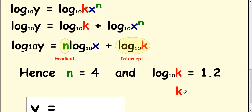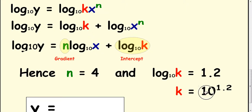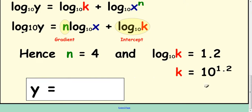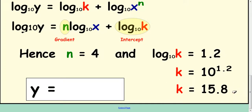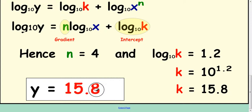To work out the value of k: 10 is your base and 1.2 is your power, so k equals 10 to the power 1.2. Type that into your calculator and you'll get 15.8. So we can rewrite the equation as y equals 15.8x to the power 4. And you're finished.